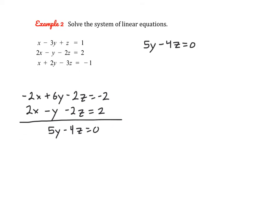And then we can use maybe the first and third equation, but I'm going to multiply my top equation by negative 1. So my x's cancel out again. So negative x plus 3y minus z equals negative 1. And then x plus 2y minus 3z equals negative 1. So adding vertically, that gives us 5y minus 4z equals negative 2.